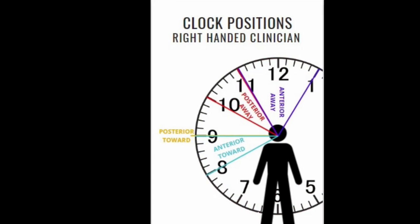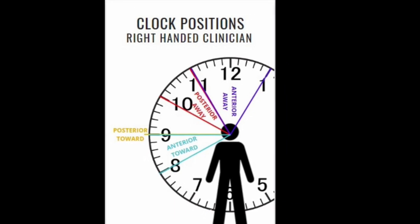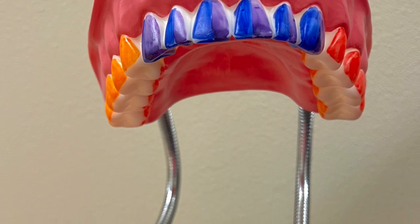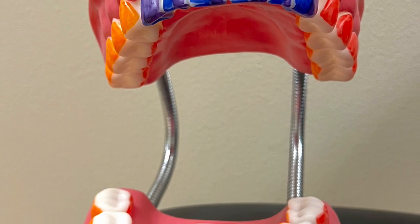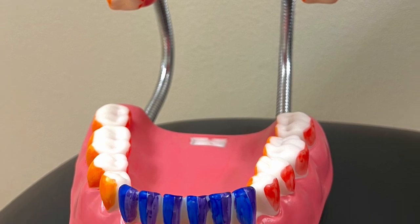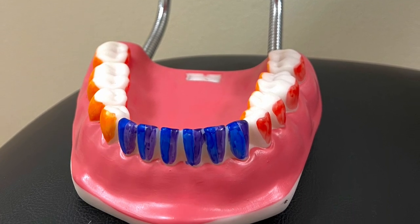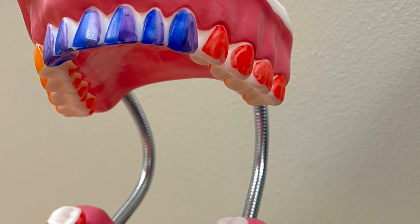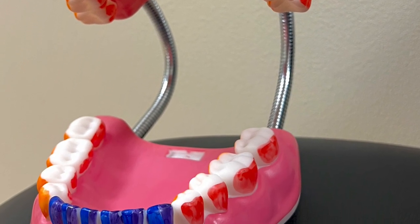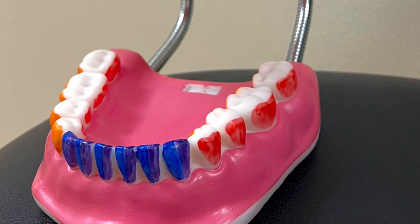To better understand the clock positions, we divide the dentition into surfaces toward the clinician and surfaces away. Surfaces toward the clinician are defined as surfaces that are facing toward the clinician, seen as the orange and blue areas. Surfaces away are defined as the surfaces that are facing away from the clinician, shown here as the red and purple areas.